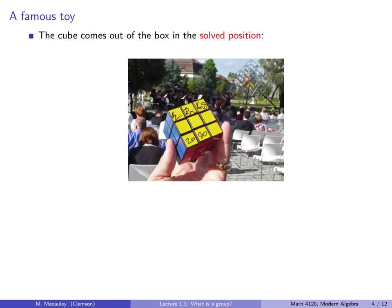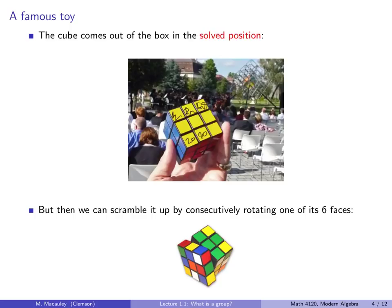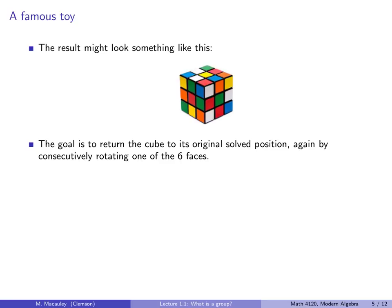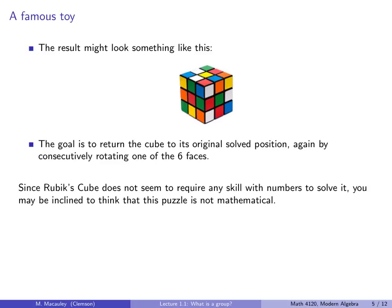The cube comes out of the box in the solved position, but of course we can scramble it by rotating one of its six faces, and the result might look something like this. Now the goal, of course, is to return the cube to its original solved position, and all you can do is rotate one of the six faces. Since Rubik's cube does not seem to require any skill with numbers to solve it, you may be inclined to think that it's not a mathematical puzzle.